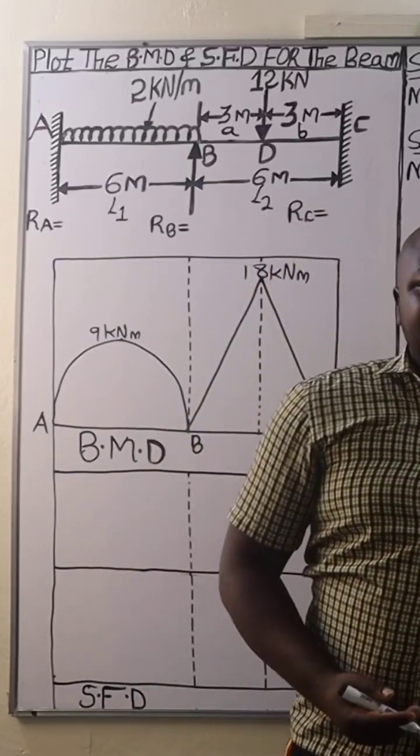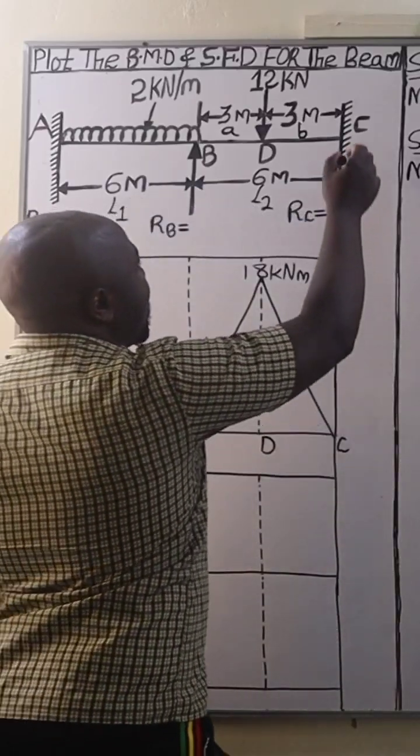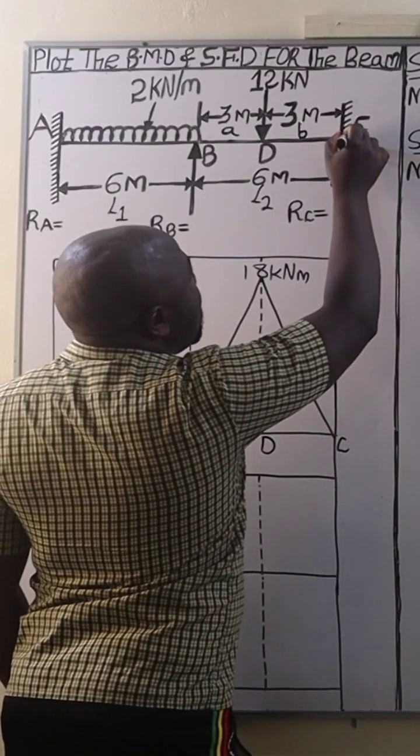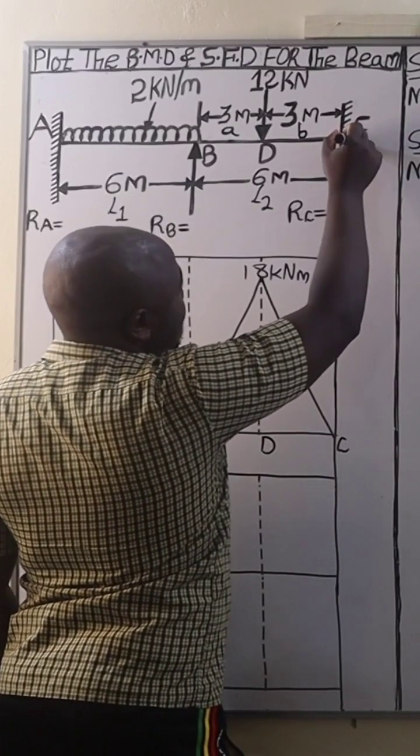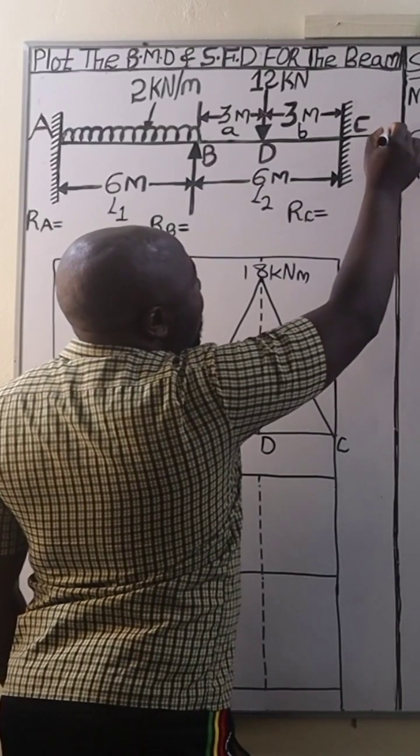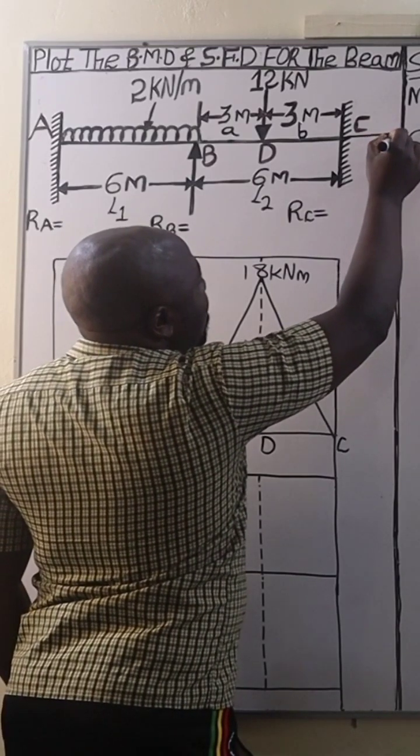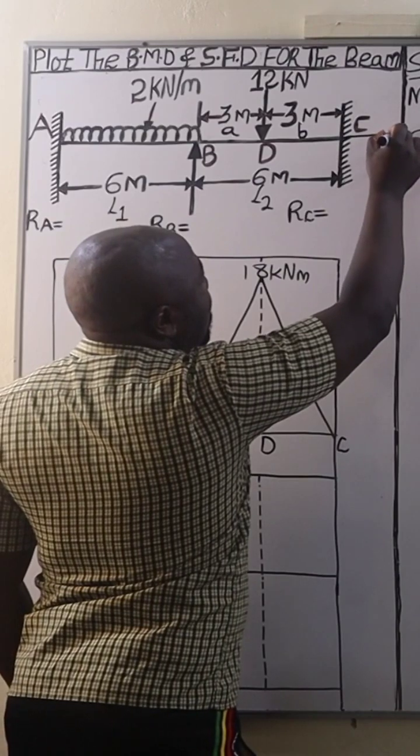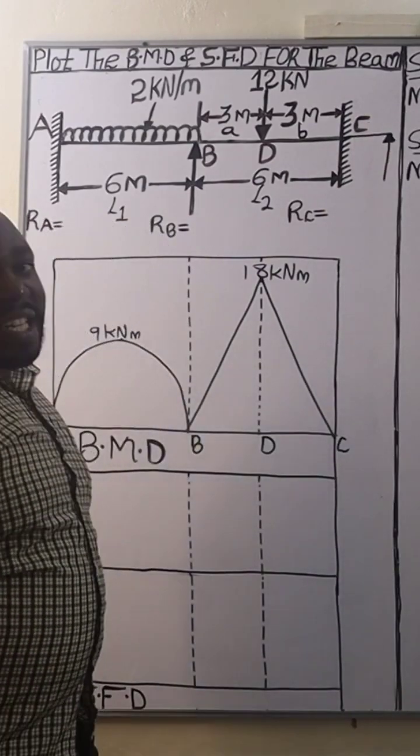Now, for a fixed beam, we must extend this beam beyond the fixed end. We extend an imaginary span as well as an imaginary support.